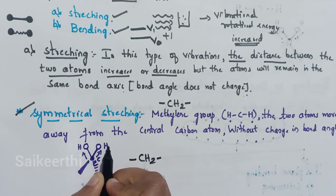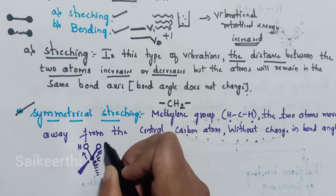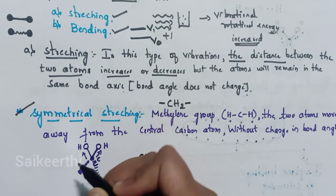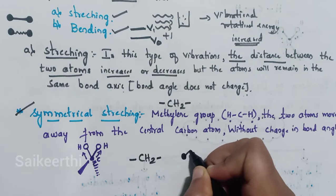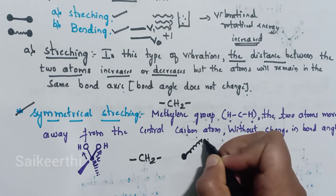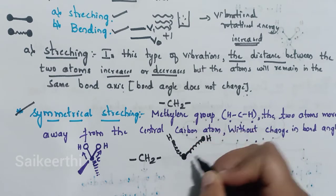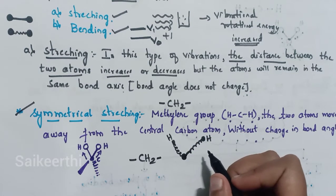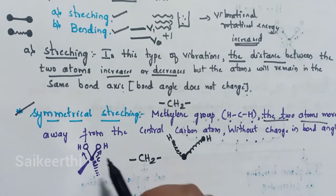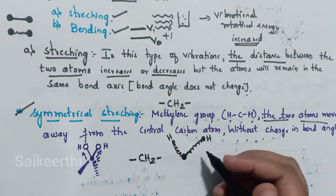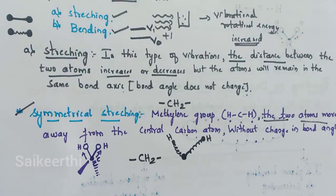Consider the CH2 group: here is the central carbon atom with two hydrogen atoms. Both bonds stretch outward — like springs — and both hydrogen atoms move away from the central carbon simultaneously. The bond length increases. In symmetrical stretching, the two atoms move away from the central carbon atom with no change in bond angle.